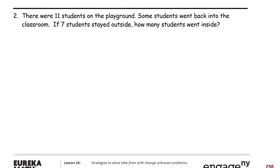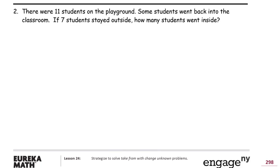Number 2. There were 11 students on the playground. Some students went back into the classroom. If 7 stayed outside, how many went inside? I'm going to draw 11 students, right? Because there were 11 students on the playground. 1, 2, 3, 4, 5, 6, 7, 8, 9, 10, 11.